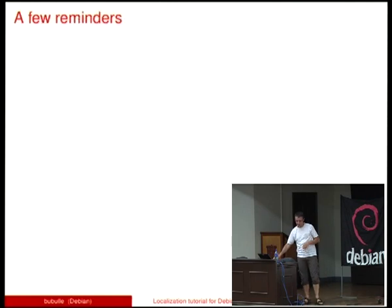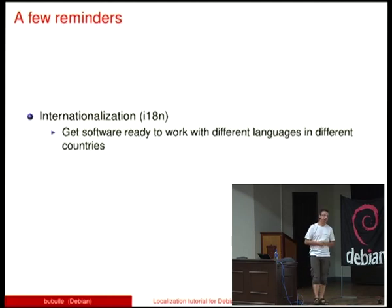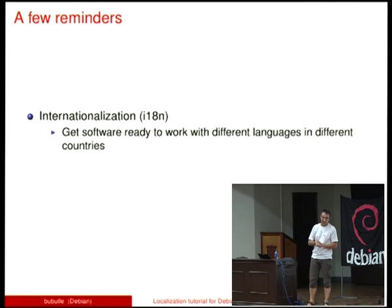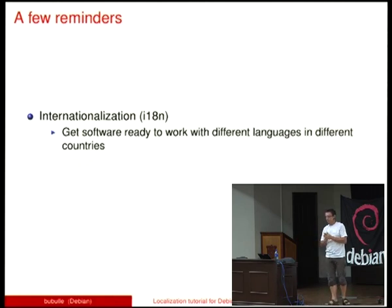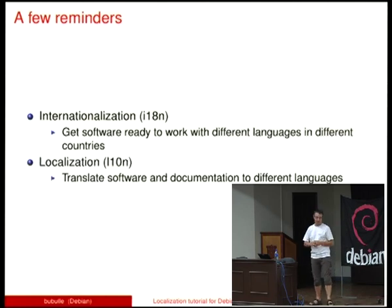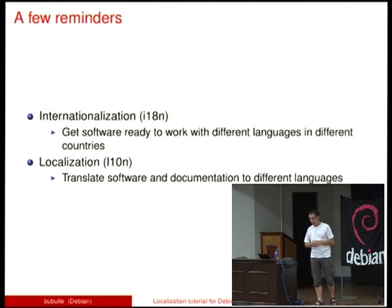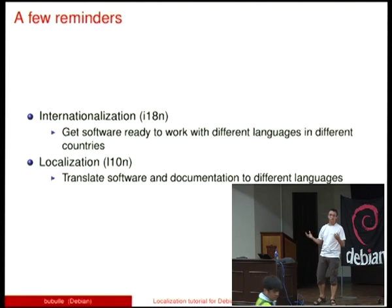A few reminders — Fernando did exactly the same yesterday. What we call internationalization — now, after 10 years, I can say it without problems — is the action to make software, or something else, usable and ready to work in different languages in different countries. And what we call localization, which we shorten as L10N because there are 10 letters between the L and the N, is the action of translating software, or something else, and documentation to different languages. You'll see I18N and L10N very often everywhere.